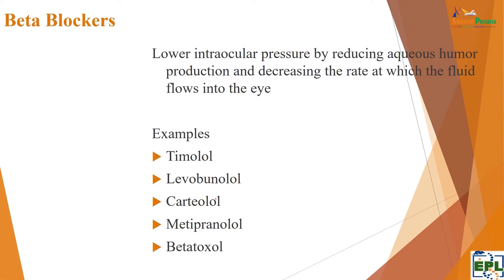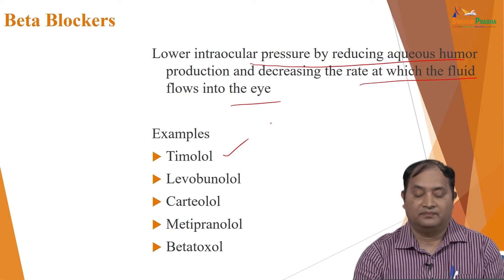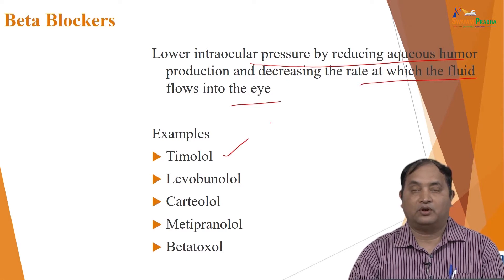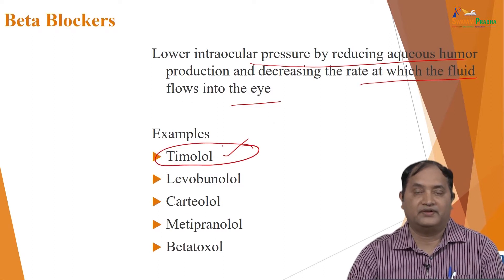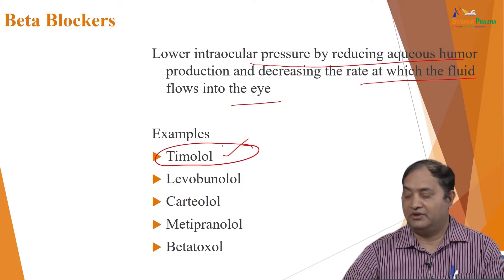Another very commonly used group to reduce intraocular pressure is selective beta blockers. Beta blockers reduce intraocular pressure by reducing aqueous humor production and decreasing the rate at which fluid flows into the eye. Typical examples include timolol — very commonly used — labetolol, carteolol, metipranolol, betaxolol. These are commonly used selective beta blockers as ocular hypotensive agents.